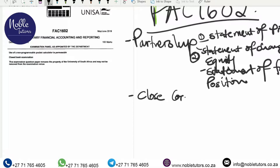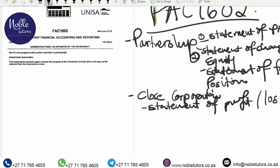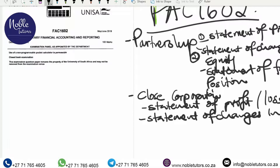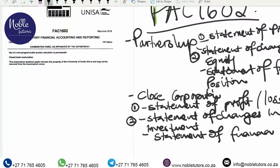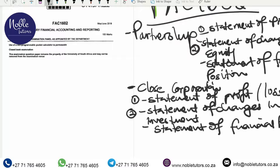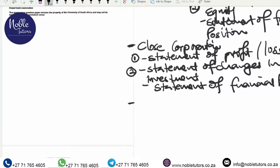From Partnership we're going to move to Close Corporation. In our Close Corporation section we're going to do a Statement of Profit or Loss again, and then look at how we share the profit or loss the Close Corporation has made. We'll prepare a Statement of Changes in Net Investment, and in the second video we'll also do a Statement of Financial Position for Close Corporation.